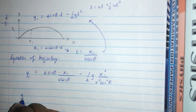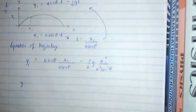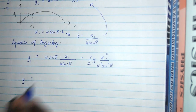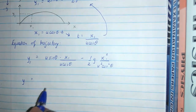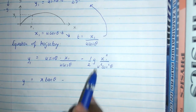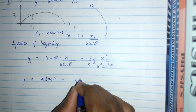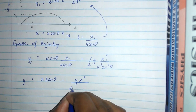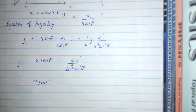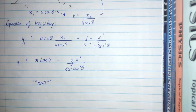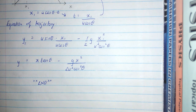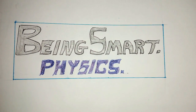Rearranging and writing in terms of x and y, the equation of the trajectory is y = x tanθ − gx² / (2u² cos²θ). This brings us to the end of the video. Any questions are welcome in the comment section — thank you.